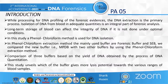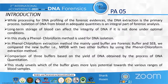Regarding the study's introduction and objectives: blood stains are considered the most commonly traced biological evidence present at a crime scene. While processing for DNA profiling of forensic evidences, DNA extraction is the primary process. Isolation of DNA from blood in adequate quantities is an integral part of forensic analysis. Whole blood samples are one of the main sources used to obtain DNA, and many different protocols are available for nucleic acid extraction, as different extraction methods yield different amounts of DNA with varying levels of purity and quantity.